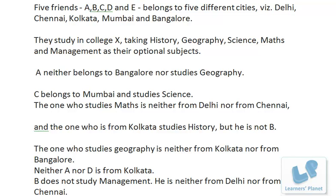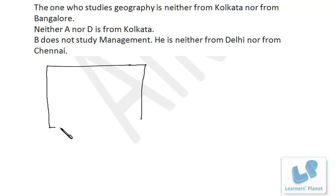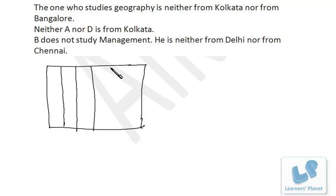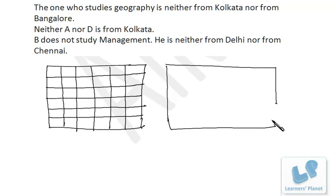Let's try this matrix puzzle. Five friends belong to five cities and are studying five different subjects. First of all, we need to make a matrix, so I'll draw it with rows and columns for cities and subjects.